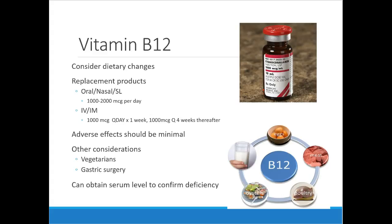Vitamin B12 is found in dairy, eggs, meat, poultry, and oysters. Replacing it is fairly easy — oral products can be given once daily, or an IM or IV shot can be given once daily for a week and then every four weeks thereafter to maintain levels. Adverse effects are minimal. Vegetarians and patients who have had gastric bypass surgery are at higher risk for B12 deficiency, and a serum level can be checked to confirm.